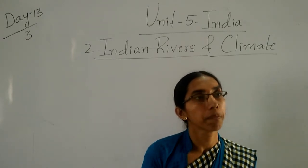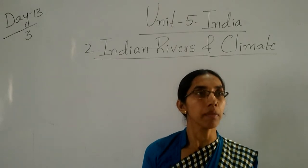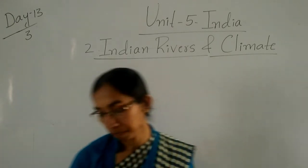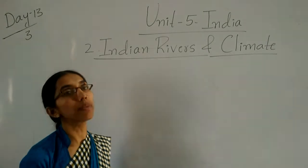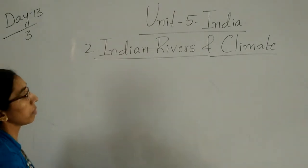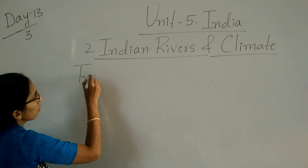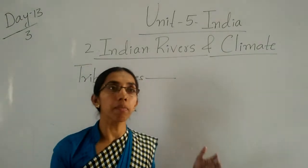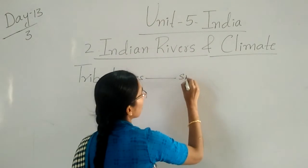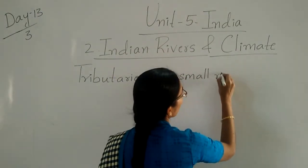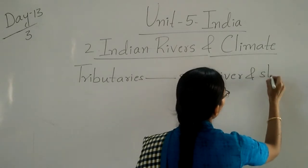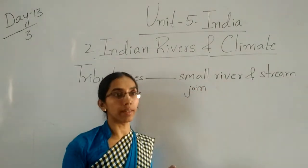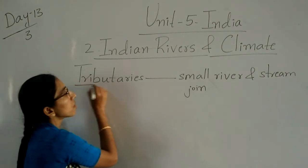Where small rivers and streams join together, they make what are called tributaries. First, understand the meaning of tributaries. Small rivers and streams join together and they form a tributary.